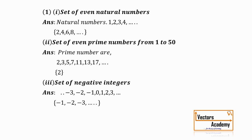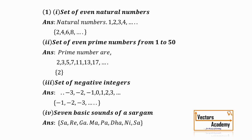Let's look at one more statement: the 7 basic sounds of sargam — sa, re, ga, ma, pa, dha, ni, sa. All these elements will come under this common set. So a set can contain numbers, it can contain words, it can contain objects — anything.